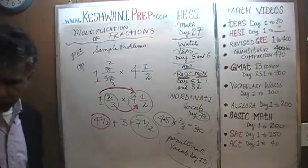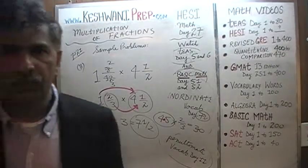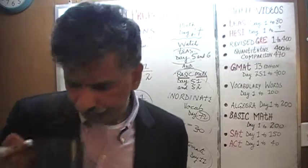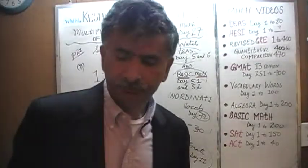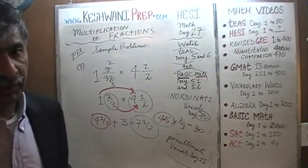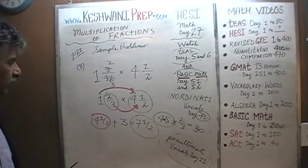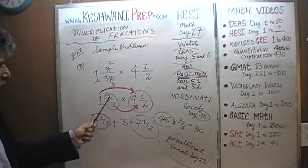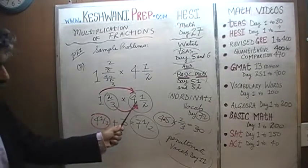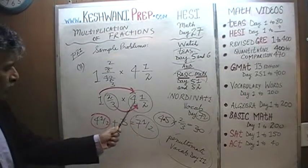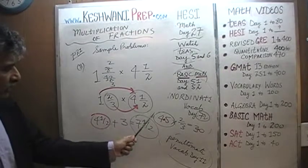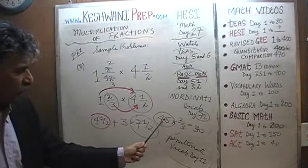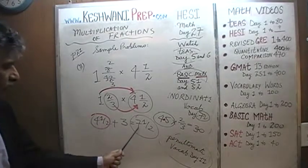If you don't like that approach, let's do it out the traditional way. What was given was 1 and 8 twelfths — we reduce 8/12 to 2 thirds, so it's 1 and 2 thirds times 4 and a half. Now convert to improper fractions: 1 and 2 thirds is 3 thirds plus 2 thirds, which is 5 thirds. 4 and a half is 8 halves plus a half, which is 9 halves. So we have 5 thirds times 9 halves. Divide top and bottom by 3: the 3 cancels and 9 becomes 3, giving us 5 times 3 over 2, which is 15 over 2, which is 7 and a half — exactly what we got before.